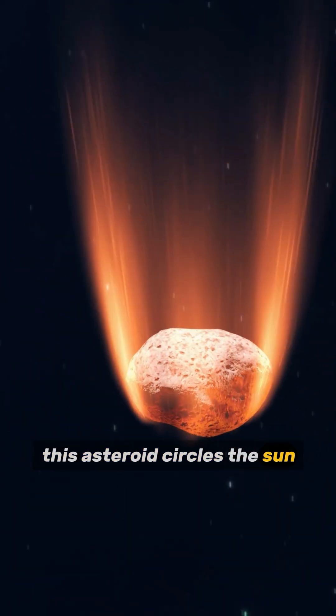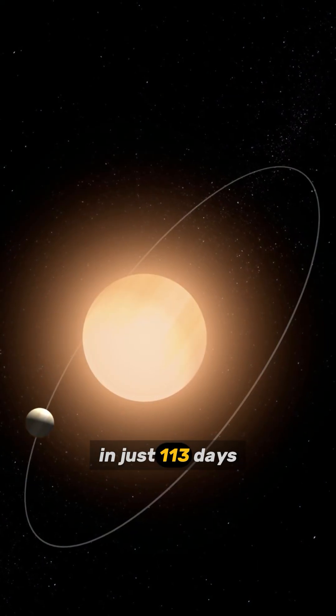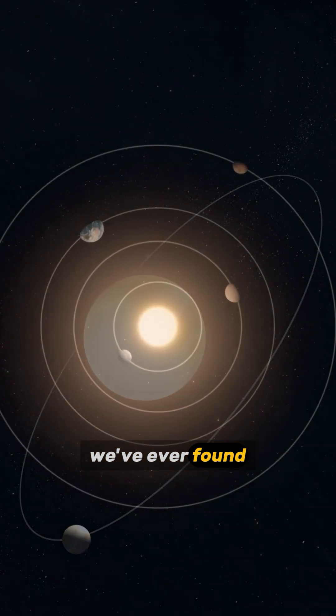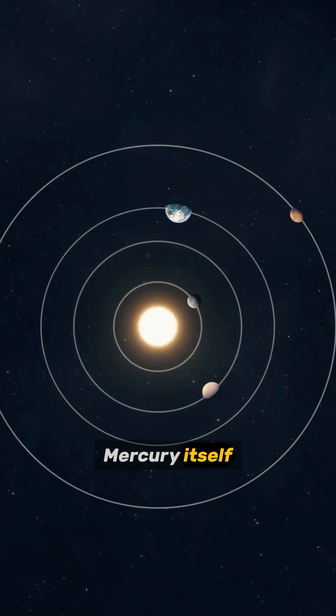This asteroid circles the sun in just 113 days. That's shorter than any asteroid we've ever found and second only to Mercury itself.